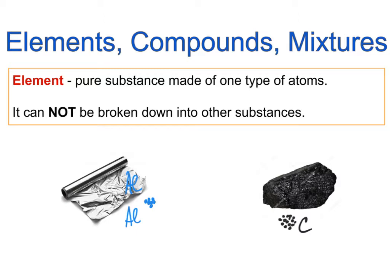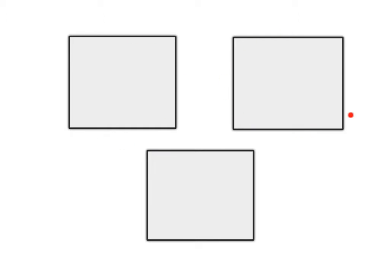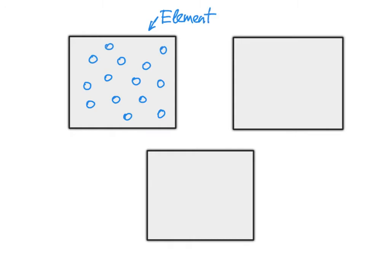In science we frequently use visual models to represent ideas. Here in these boxes I will try to represent elements. We defined elements as pure substances made out of one type of atom. Here in this box I will draw circles representing atoms, and since the circles are made of the same color, they represent atoms of the same kind. All atoms in this box are of the same kind — it means that this is an element.